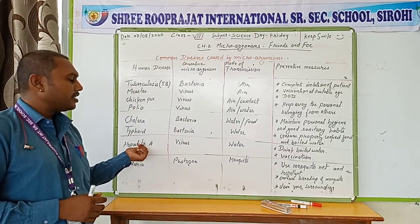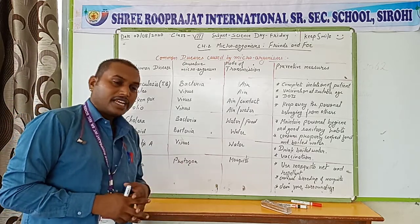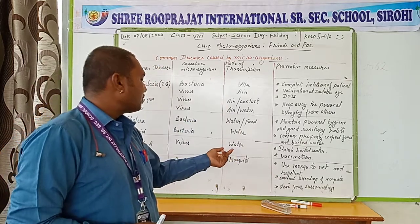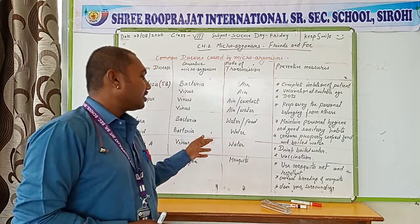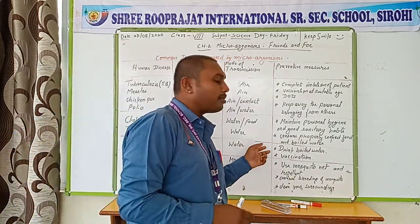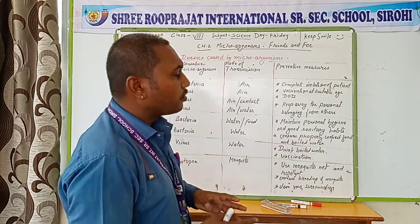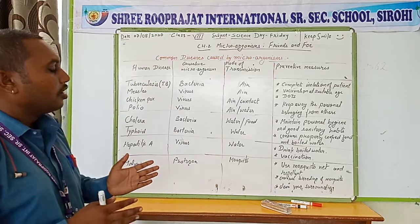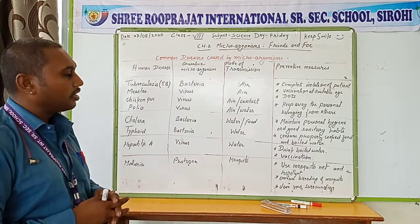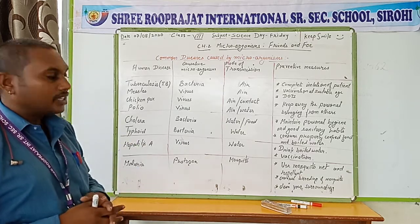Hepatitis A is a disease caused by viruses that are also present in contaminated water, so the mode of transmission is contaminated water. For preventive measures, we should drink clean water. There are two types of vaccinations — Hepatitis A and Hepatitis B — given to children so that they can be protected from this type of disease.